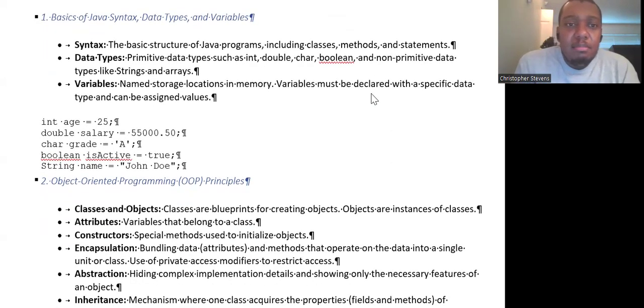Just look at some of the basics. Remember that we have our syntax, the basic structure of Java programs, including classes, methods, and statements. And our data types - our primitive data types, such as integers, doubles, characters, booleans, longs, bytes, shorts, and floats. These are our basic ones that we constantly use. And there are non-primitive data types, like strings and arrays.